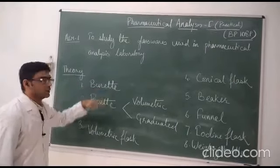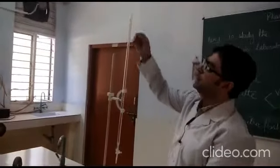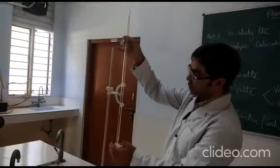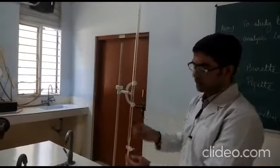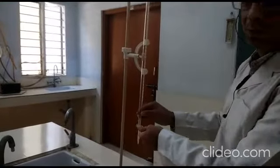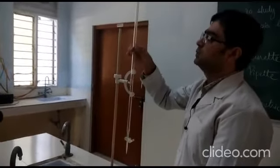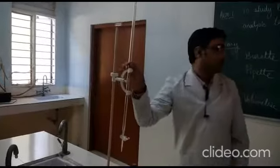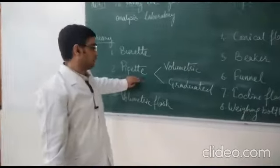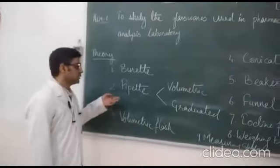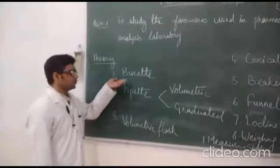First is the burette. You can see the burette placed here. It has markings from 0 to 50 ml and is used for titration. It has a stopcock which is used to stop the solution from flowing out, and a capillary tube tip at the bottom. The burette is held on a burette stand and is used for titration.